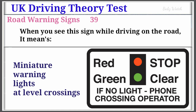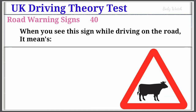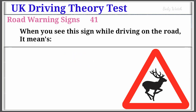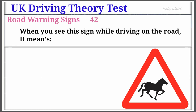UK Driving Theory Test Road Warning Sign Number 40: When you see this sign while driving on the road, it means Cattle. Warning Sign Number 41: When you see this sign while driving on the road, it means Wild Horses or Ponies.